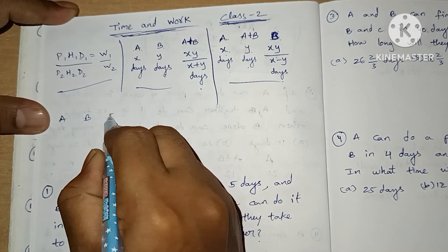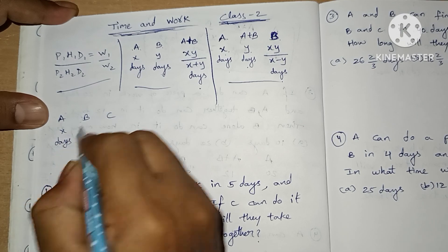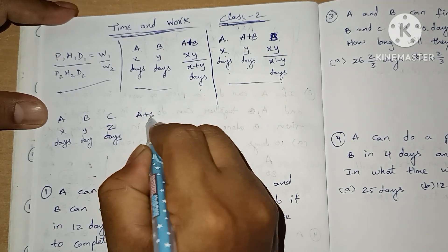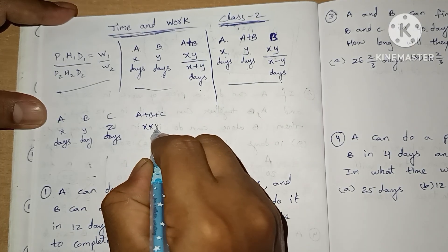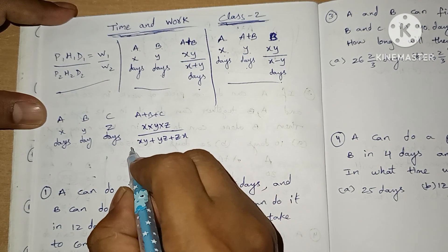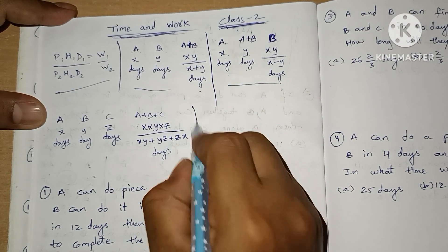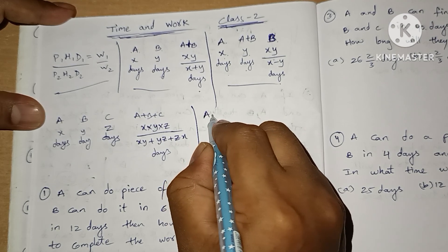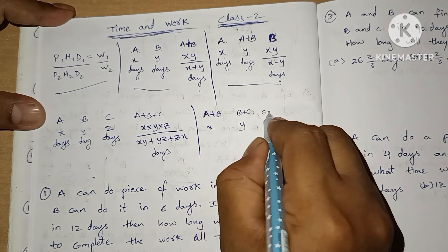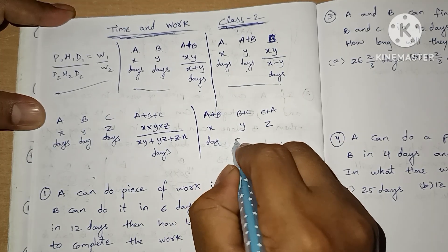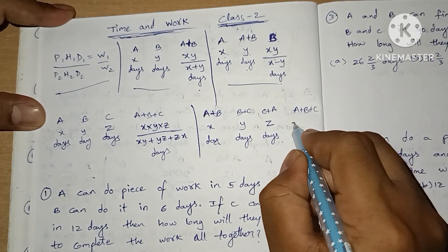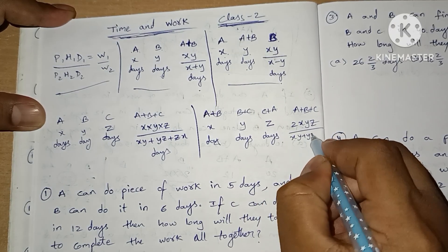In today's class, we will look at three people: A, B, and C. If A can do a work in X days, B in Y days, and C in Z days, then together A, B, and C can do the whole work in XYZ divided by (XY + YZ + ZX) days. There is also a second formula: if A and B together can do the work in X days, B and C in Y days, and C and A in Z days, then all three together can do it in 2XYZ divided by (XY + YZ + ZX) days.